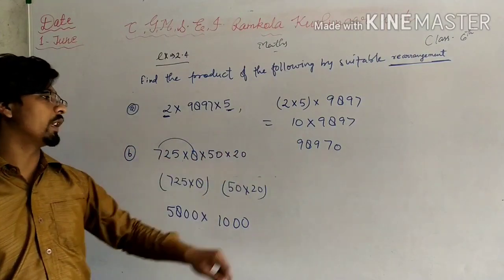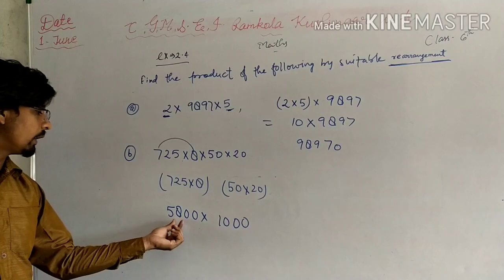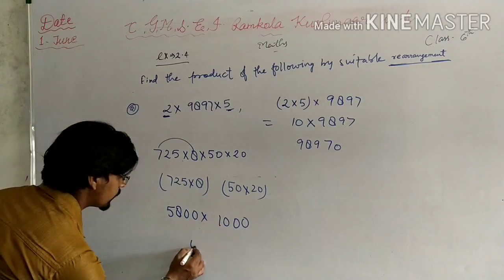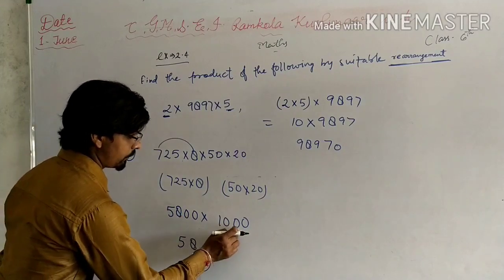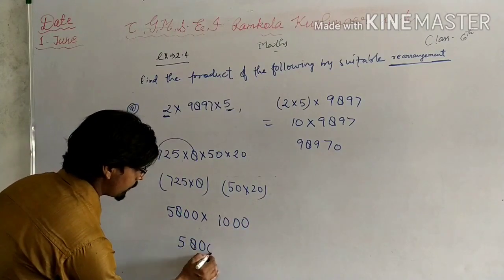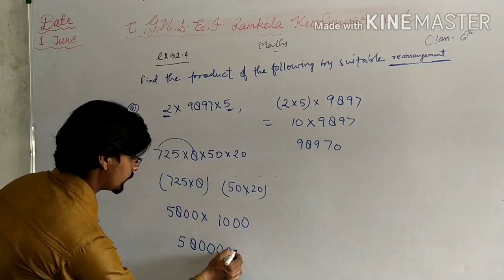Now you can see, in the previous portion, here are 1, 2, 3, 4, 5 zeros. Just count the zeros and write them down, and 5 into 1 is 5, and 8 into 5 is 40. This gives you the final answer.